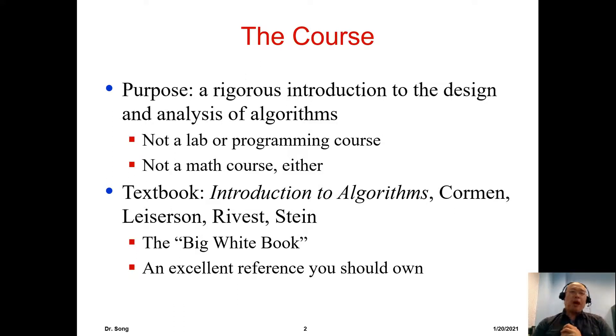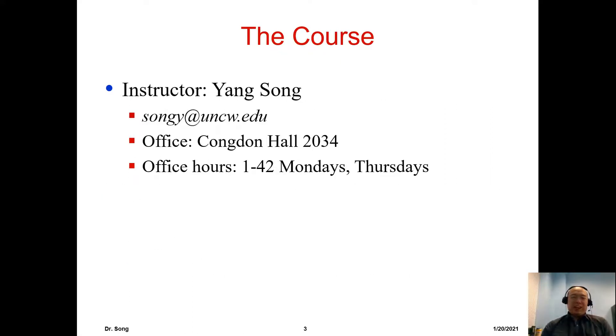For the textbook, our textbook is Introduction to Algorithms by Cormen and a couple of other people. I have this book, but it is at home. This is a huge white book, so people usually call it the big white book. This is an excellent reference, but I want to be honest with you, this is a hard book to read. This is probably the most famous book about algorithms, but reading this book can be tough. Does that mean you don't have to read the book? No, you do.